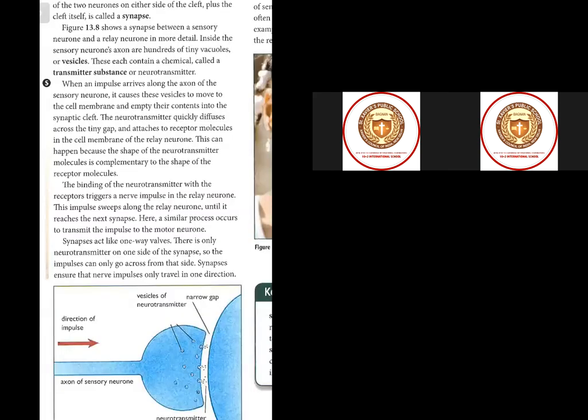From the axon of the sensory neuron, the neurotransmitters get diffused to the synaptic cleft, and then the message can be transmitted from the sensory neuron to the relay neuron. This can happen because the shape of the neurotransmitter molecules is complementary to the shape of the receptor molecules. The binding of the neurotransmitter with the receptors triggers a nerve impulse in the relay neuron, and this impulse sweeps along the relay neuron until it reaches the next synapse.